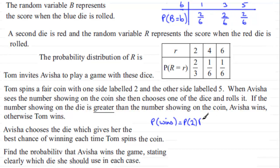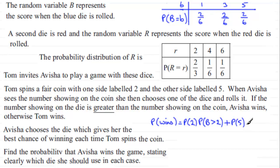So she goes with the blue die — that's the probability of the blue die getting a score greater than two. She can win in that scenario. Or, since these are mutually exclusive events, she could spin the coin and get a five. But if she gets a five, she's got to beat that score now. If she were to pick the blue die, she can't get more than a score of five, so she just can't use that one.